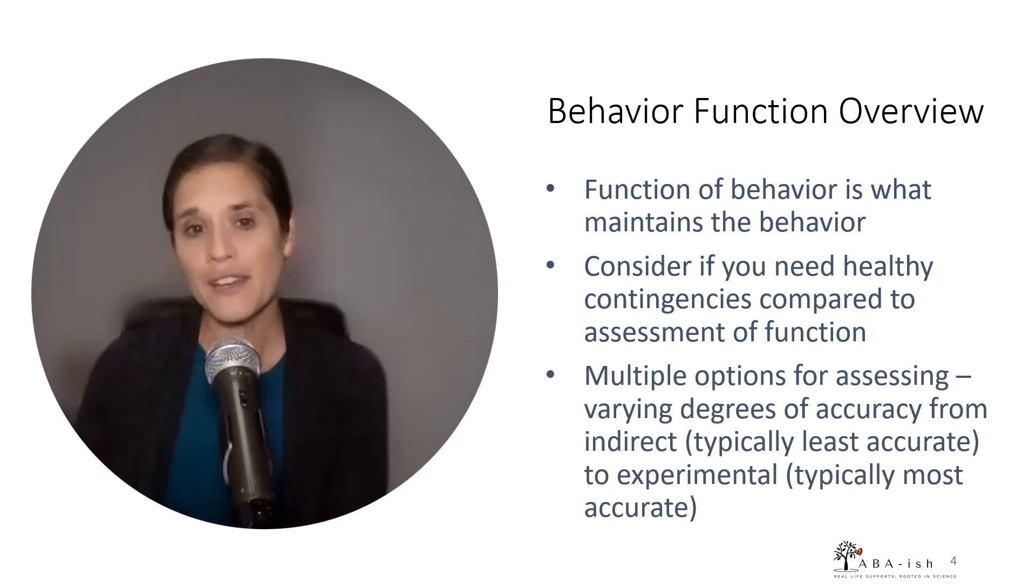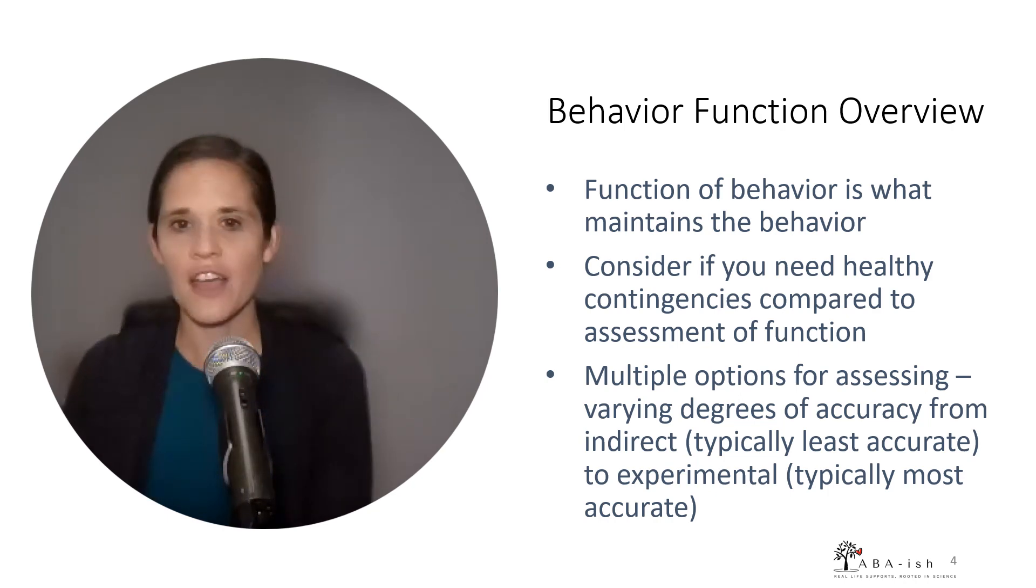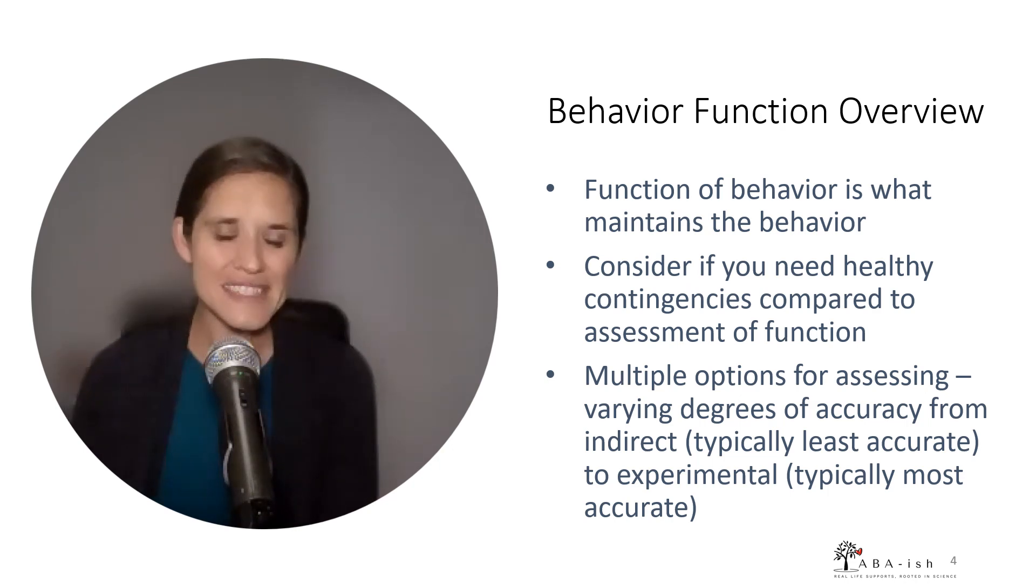If we do want to know the function of a behavior, we have a bunch of different options for how we can assess that. They vary in degree of accuracy from our indirect measures, which include things like rating scales and interviews and are typically our least accurate, to experimental or functional analyses, which are typically our most accurate because they involve actual manipulation of the situation to see what behavior occurs and if behavior maintains.